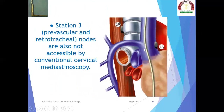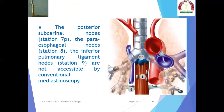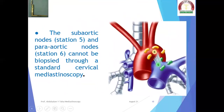Station 3, the prevascular and retrotracheal nodes, are also not accessible by conventional cervical mediastinoscopy. The posterior subcarinal nodes (station 7p), the paraesophageal node (number 8), and the inferior pulmonary ligament node (station 9) are not accessible by conventional mediastinoscopy because they are out of reach of the mediastinoscope. The subaortic (station 5) and paraaortic (station 6) nodes cannot be biopsied through the standard cervical mediastinoscopy.